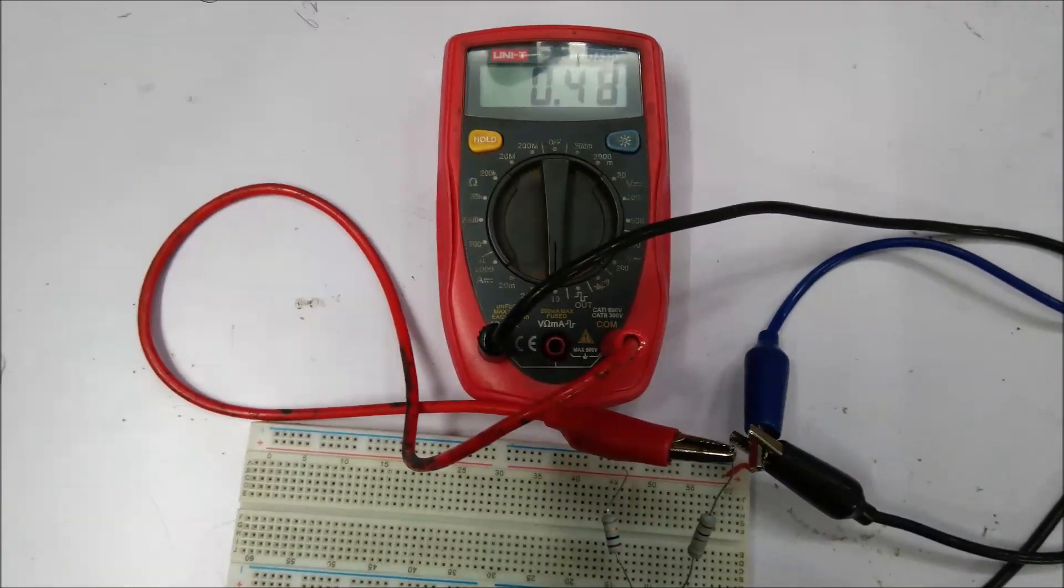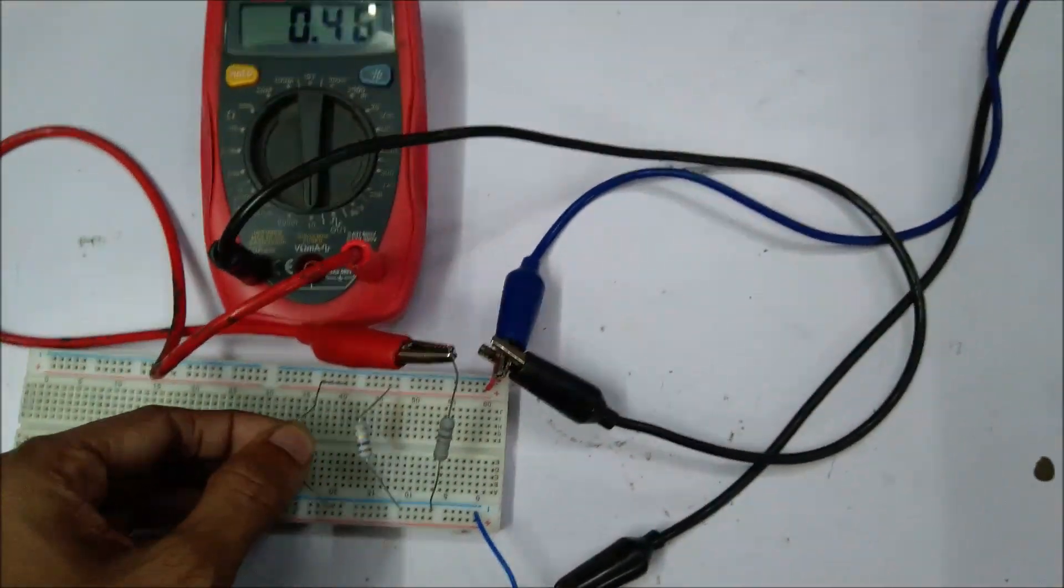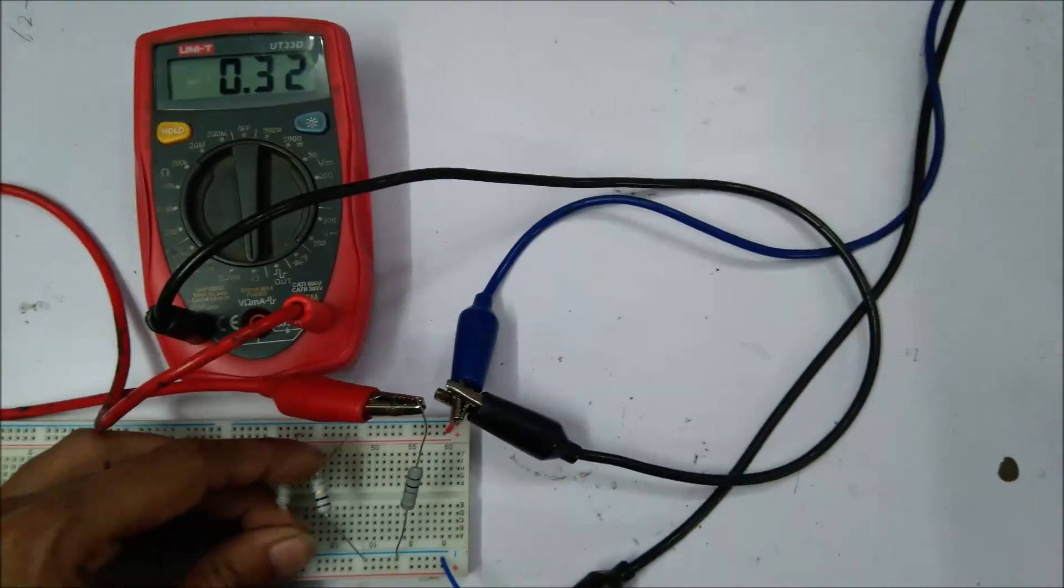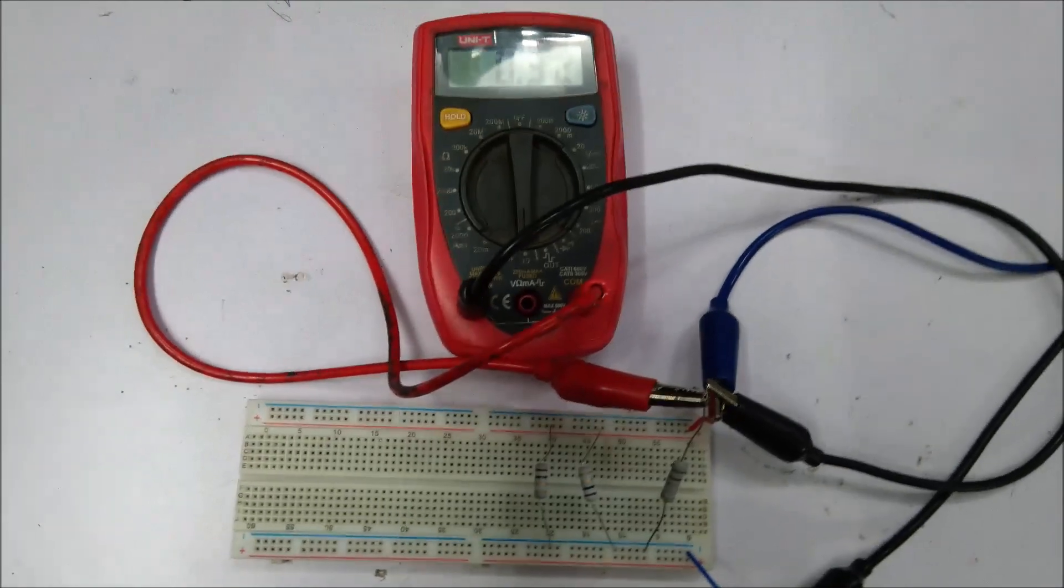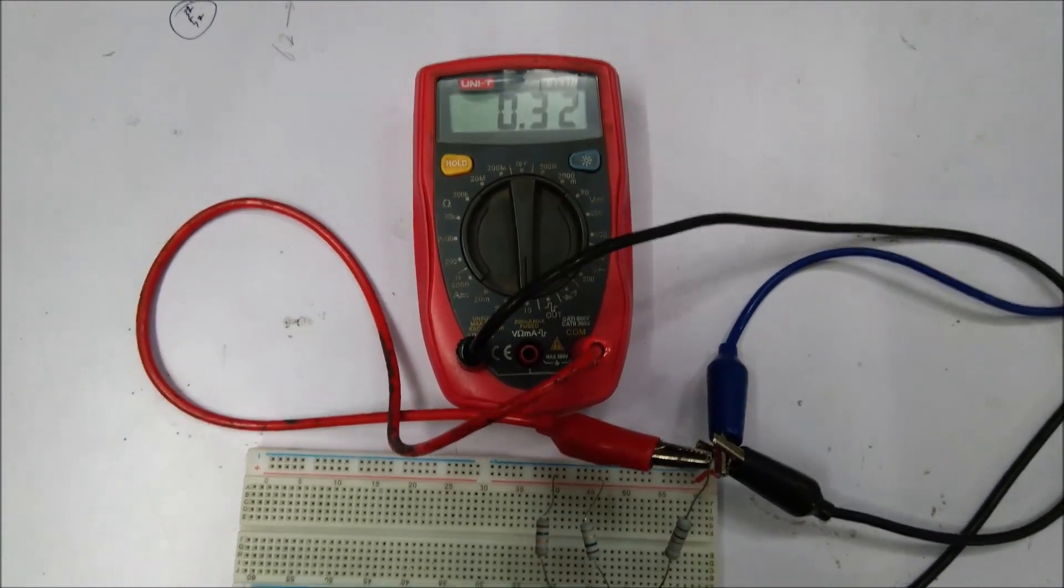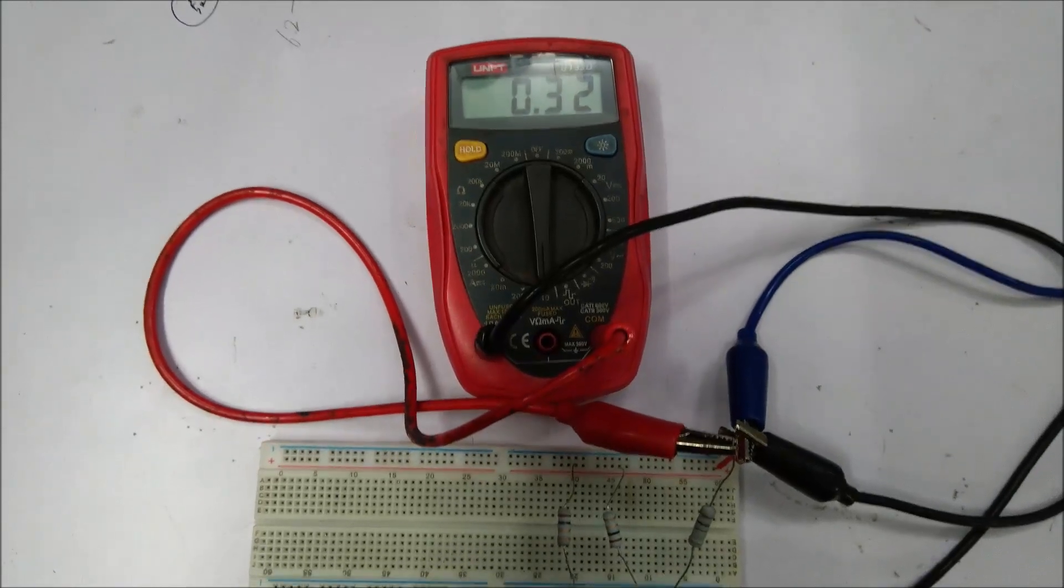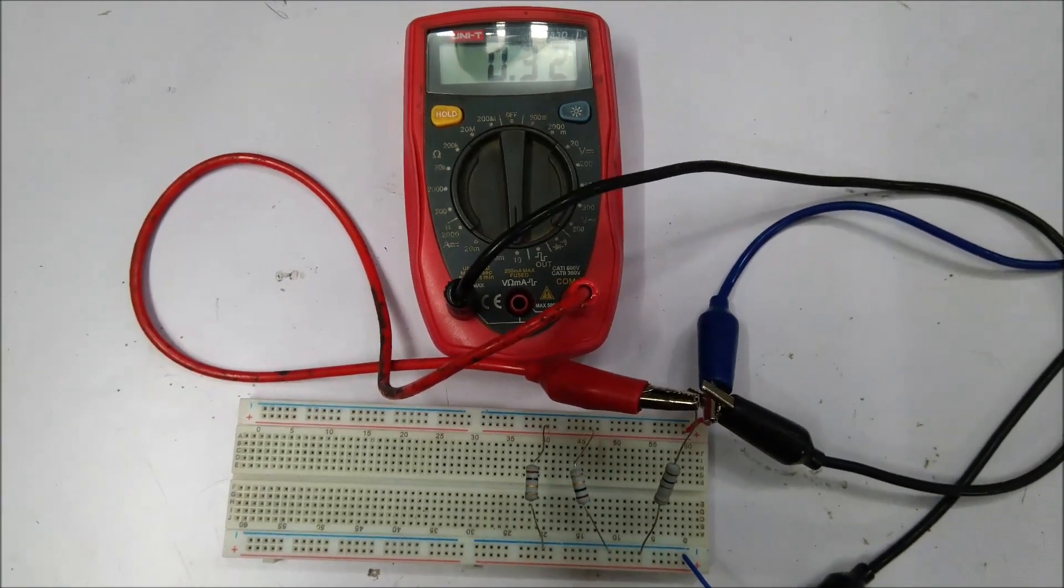And again I am connecting another resistor in parallel. So now three 1 ohm resistors are set in parallel configuration. So here is 330 milliamperes of current flowing through each resistor.